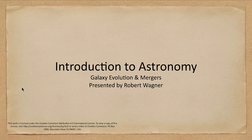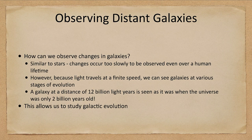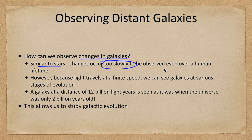How can we observe changes in galaxies? Well, just like when we looked at stars, the changes occur too slowly to be observable even over a human lifetime or multiple human lifetimes. What we see as a galaxy today we are going to see essentially exactly the same thing a hundred or even a thousand years from now.